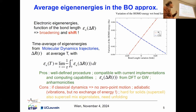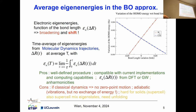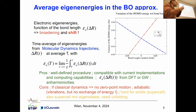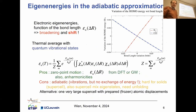It is a well-defined procedure using molecular dynamics trajectories. It is compatible with current implementations and computing capabilities. One can use either DFT, with its well-known problems, or GW, which is a much better predictor for the eigenenergies, and anharmonicities might be included. There are nevertheless two problems: if we use classical dynamics, there is no zero-point motion at zero temperature. Also, it is adiabatic, in the sense that we freeze the atomic position and get the eigenenergies at that configuration — no exchange of energy between the electronic system and the phonon system.